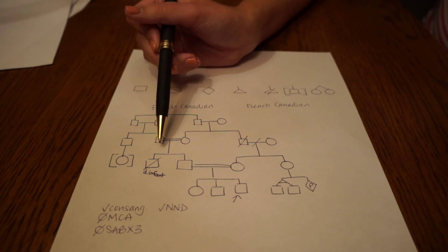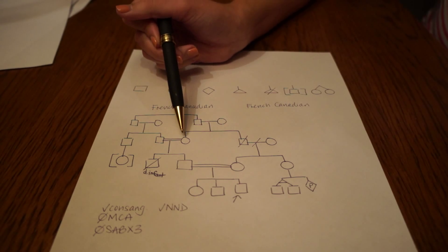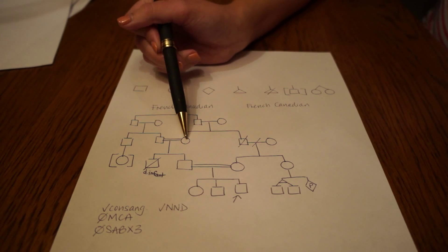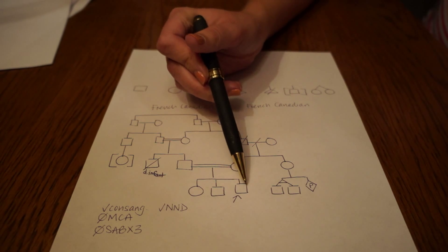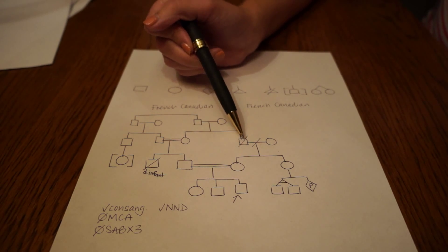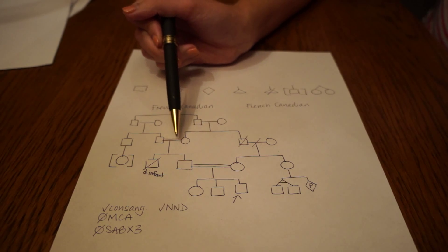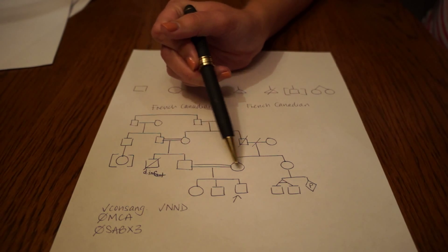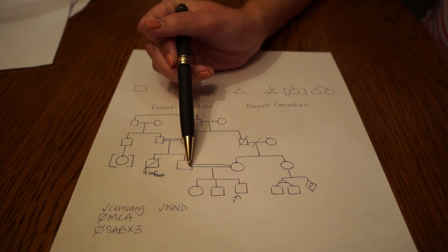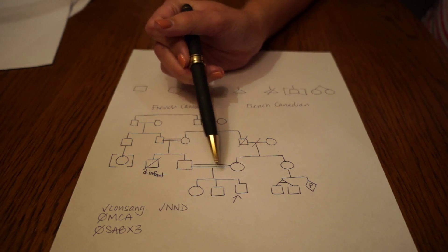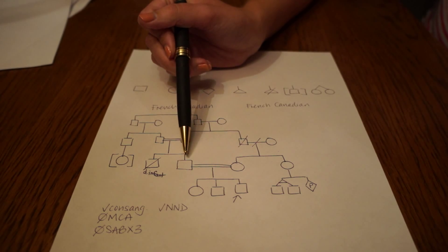In addition to this, the father's parents are related to our proband's mother's parents, making that union consanguineous. That is represented by a double line.